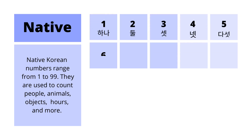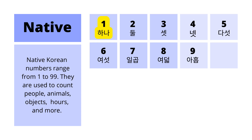Here are numbers 1 through 9. We have 하나, 둘, 셋, 넷, 다섯, 여섯, 일곱, 여덟, and 아홉.